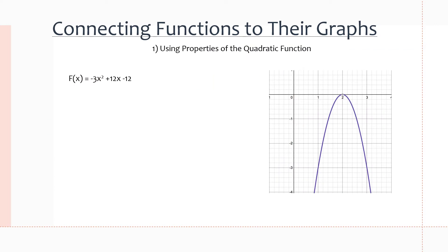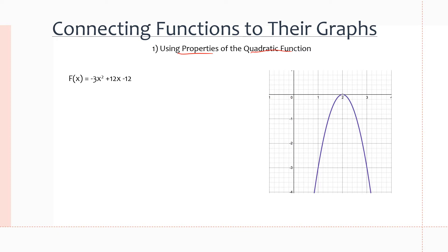Let's go right into our first example. We're going to use the properties of a quadratic function to connect this quadratic equation to its graph. We want to see if they match — we can find the vertex to see if it matches, and we can find the zero which is actually at the vertex. So we'll factor it into its zeros and then find the vertex from there.